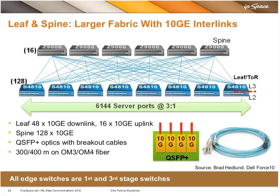As we mentioned on the previous slide, we were using a 3 to 1 oversubscription at the leaf switch, which is also the top of rack. That meant 48 10-gig ports going into the server cabinet, and 160 gig of bandwidth as the uplink going to the spine layer. We were provisioning that 160 gig by using 4 ports of 40 gig as the uplink out of the top of rack.